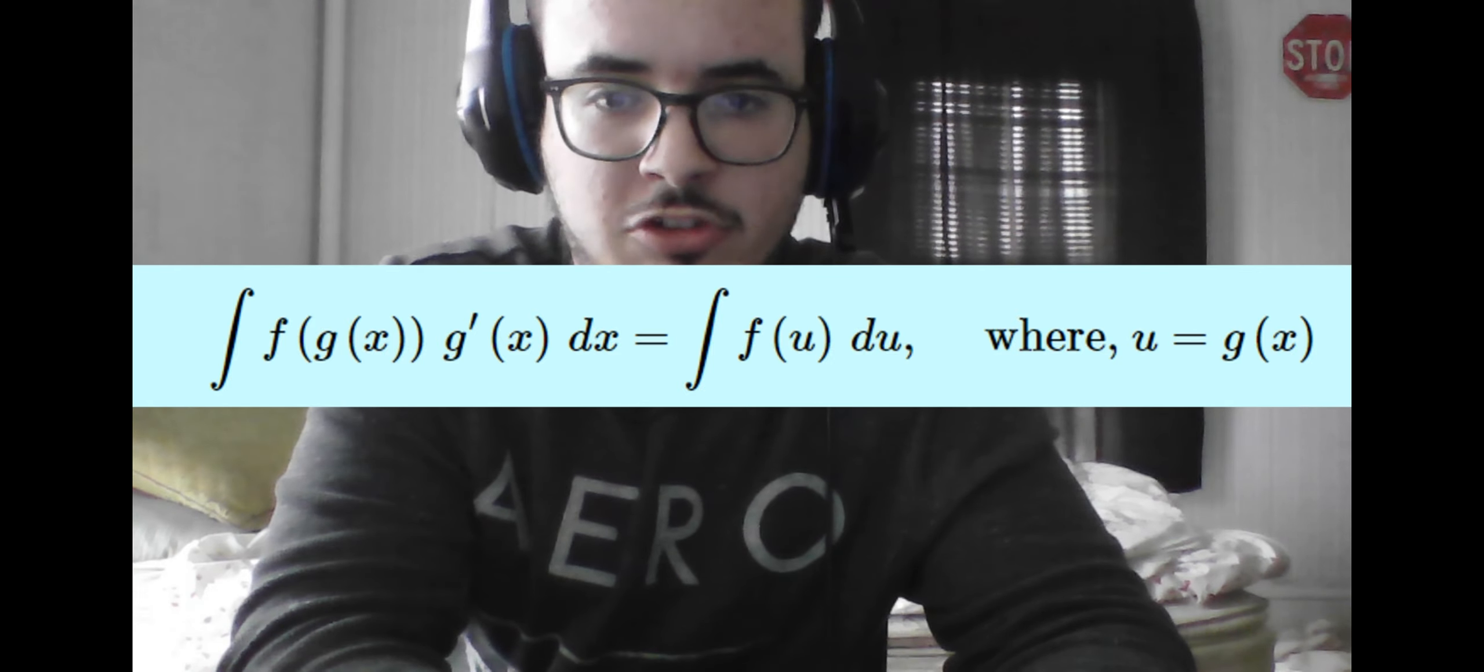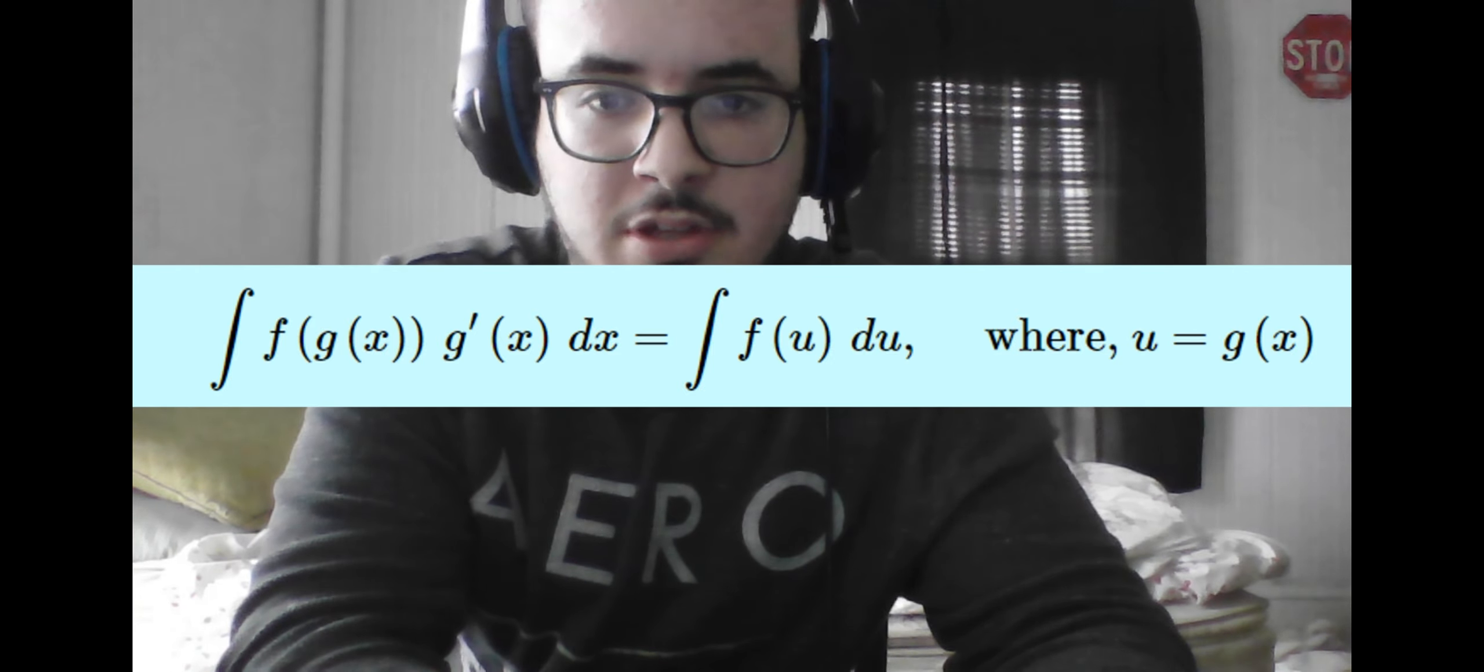Since we remember from the previous tutorial video that integrals are essentially derivatives in reverse, we should also be able to recall what the chain rule is for composite function derivatives. So we should see that when we take the integral of this derivative we should get the composite function back, just like taking the integral of any derivative will undo it.